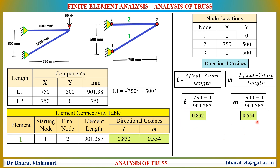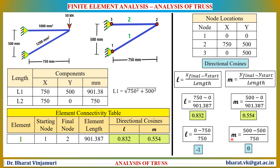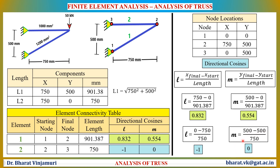For element number 2, the starting node is node 2 and the final node is node 3. The X coordinate of the final node is 0 and of the starting node is 750, so L = (0 − 750) / L₂. For M, the Y coordinate of the final node 3 is 500 and of the starting node 2 is also 500, so M = (500 − 500) / 750 = 0. The directional cosines are then listed in the element connectivity table.